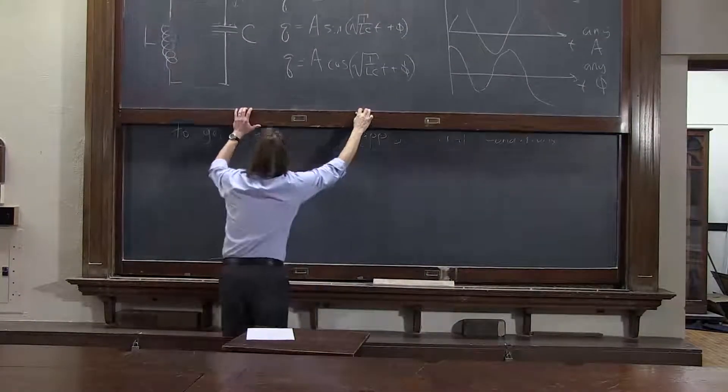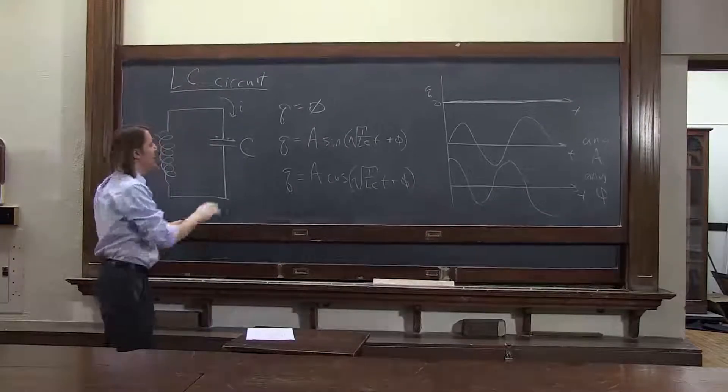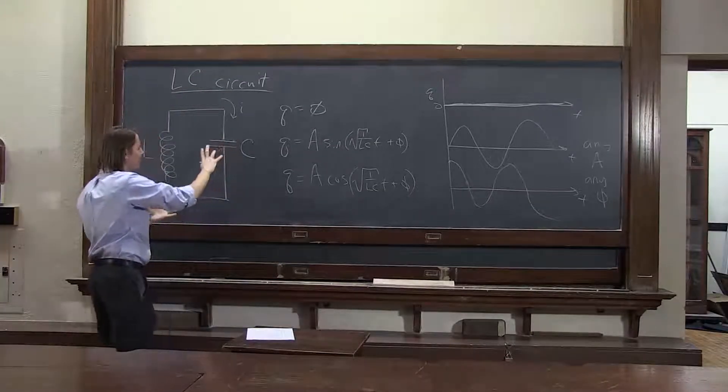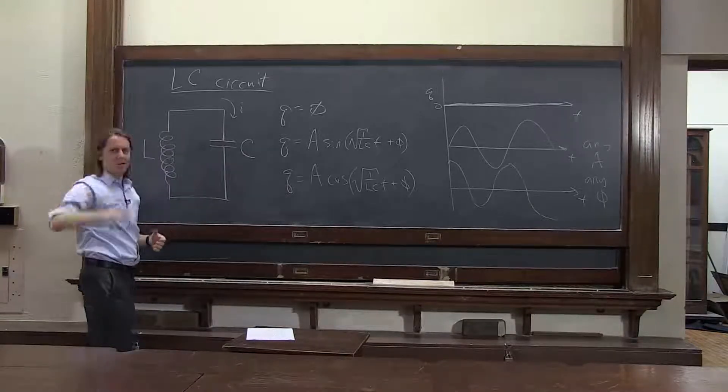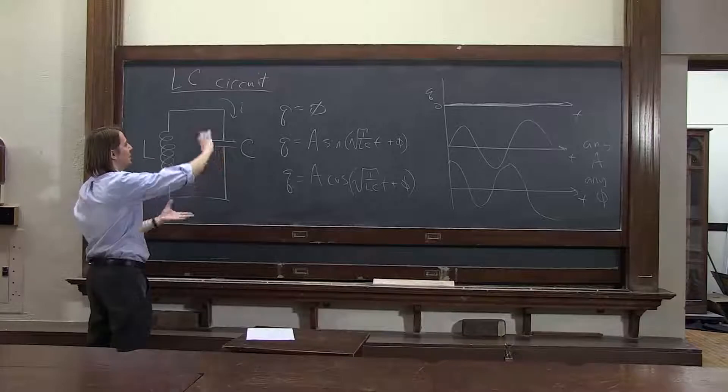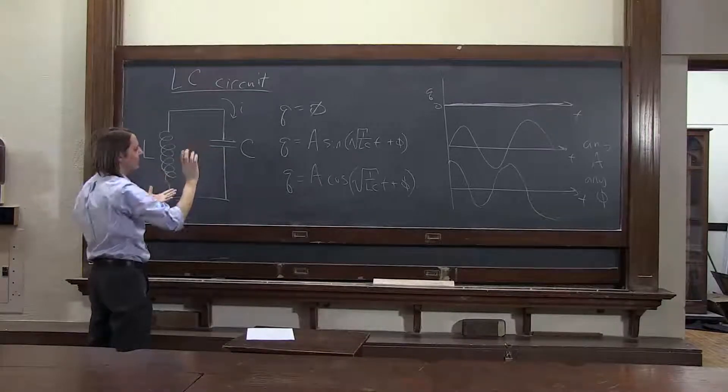So in this case, we want to think about this thing and imagine, okay, maybe it's sitting there neutral doing nothing. But if we could somehow grab the charge on this side and put it on that side and let it go and see what happens. That's kind of physically what we're thinking of doing. Perturb it and release it at time equals zero.